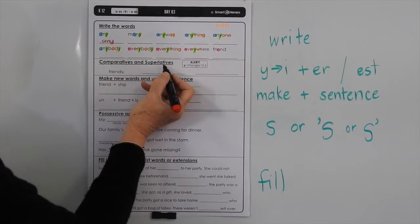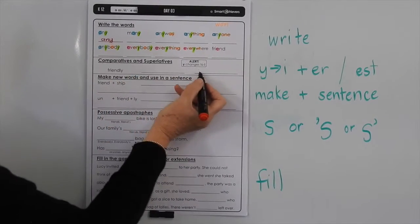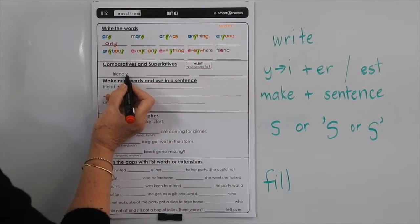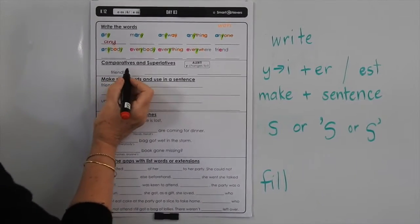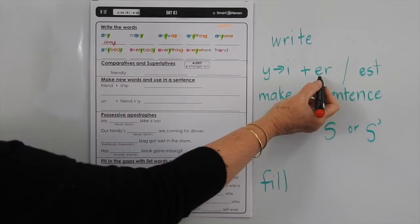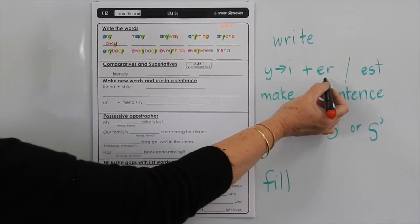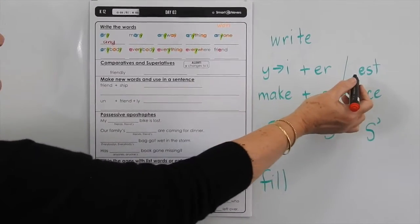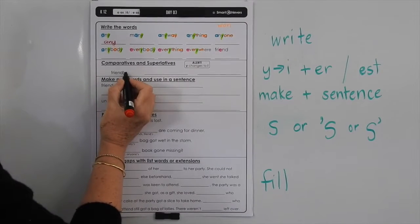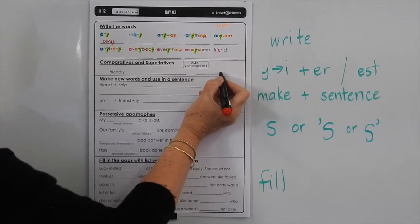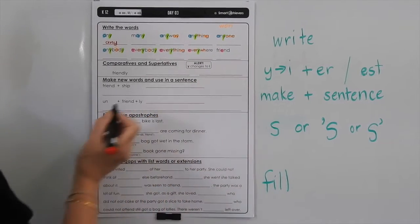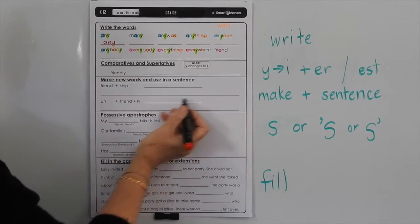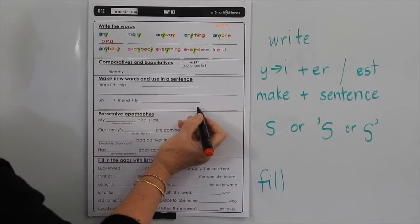Now, comparatives and superlatives — this is where we want to say 'more friendly' and 'the most friendly.' There's a little alert: if a word ends in Y and there's a consonant before the Y, you change the Y to an I before you add E-R and E-S-T. So E-R means 'more' — more friendly. E-S-T means 'the most friendly.' So 'friendly' — change the Y to an I, add E-R. And for superlative, change the Y to an I and add E-S-T. Down here it says make new words and use in a sentence: 'friendship' and 'unfriendly.'